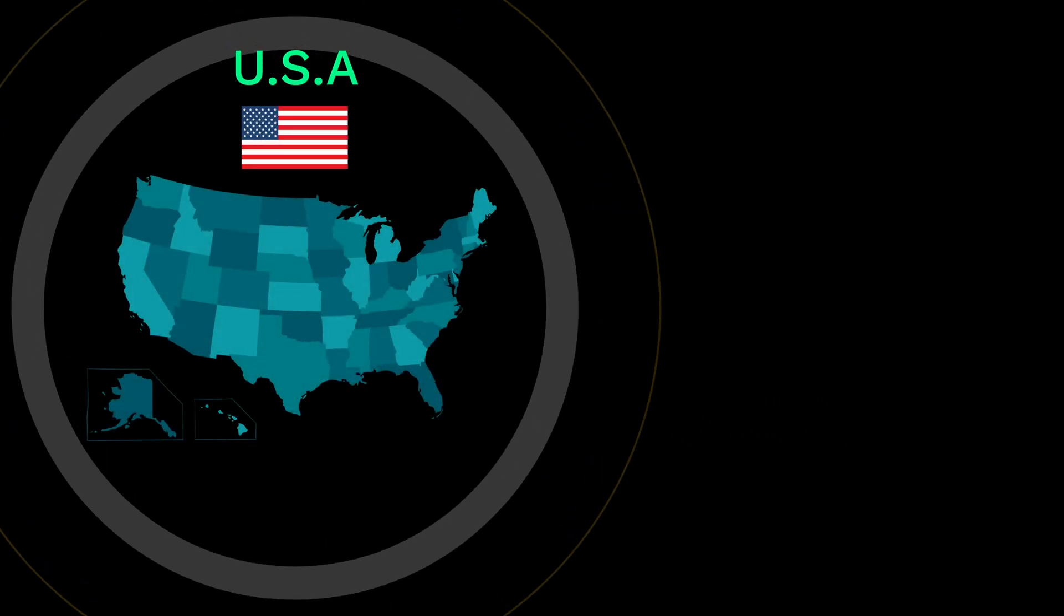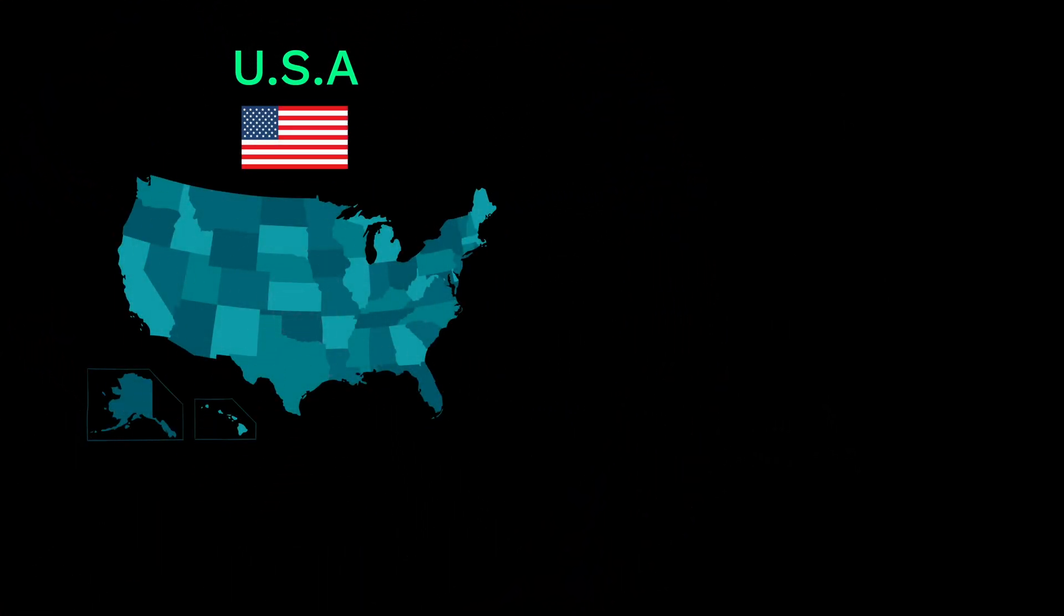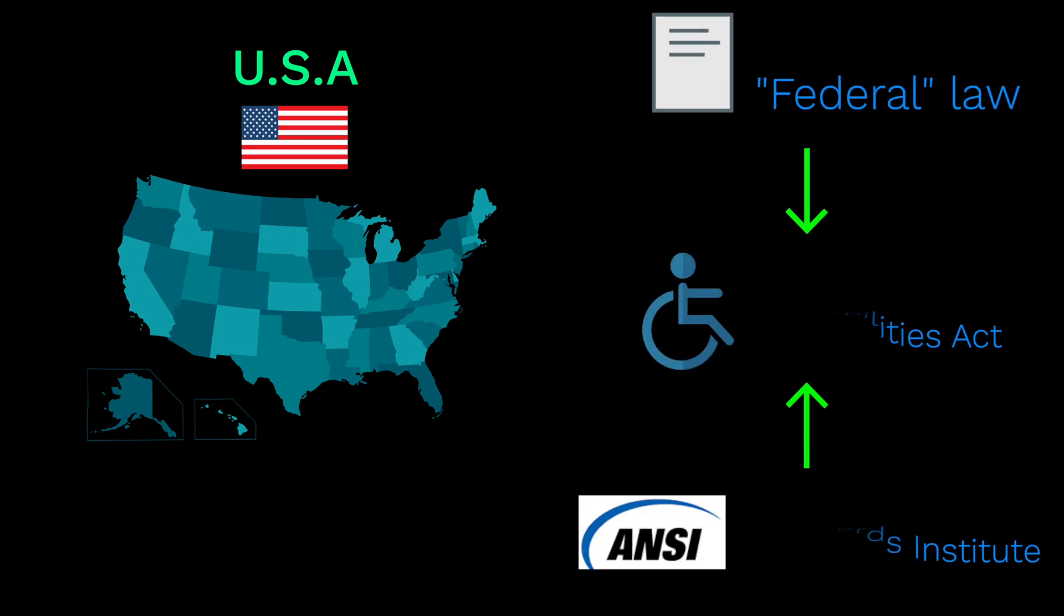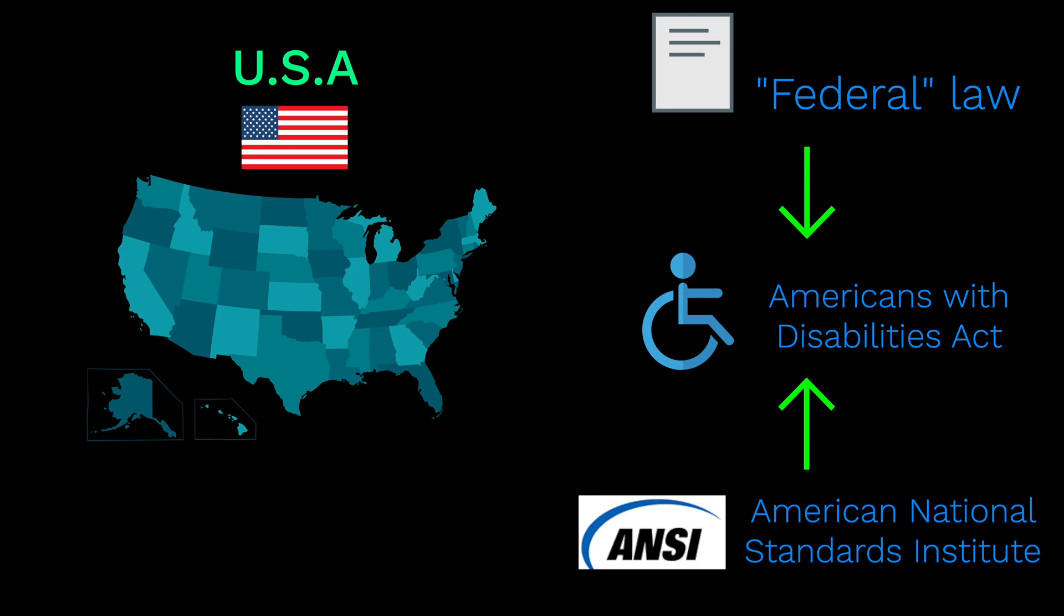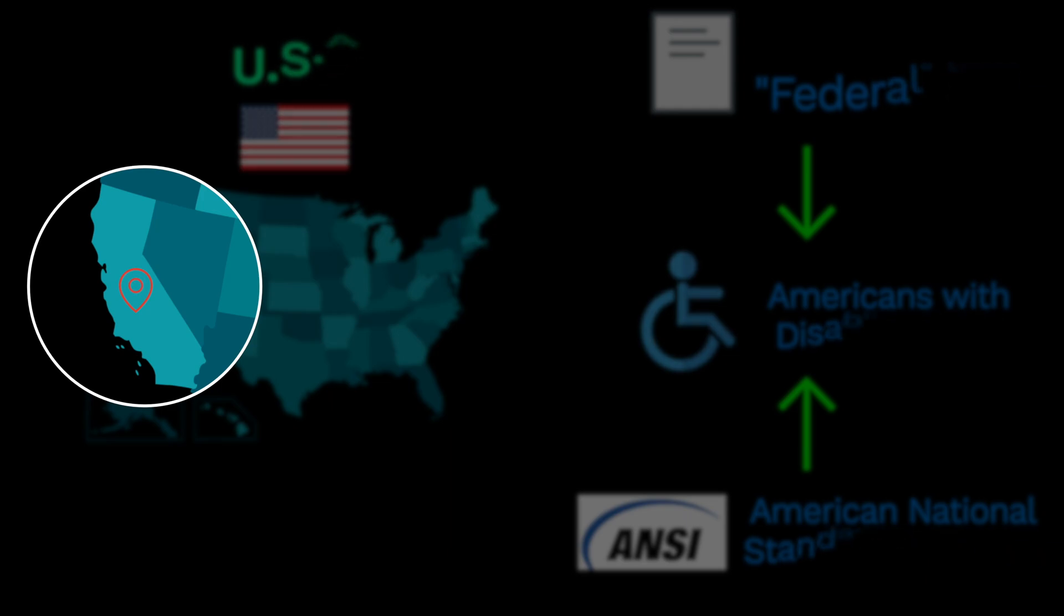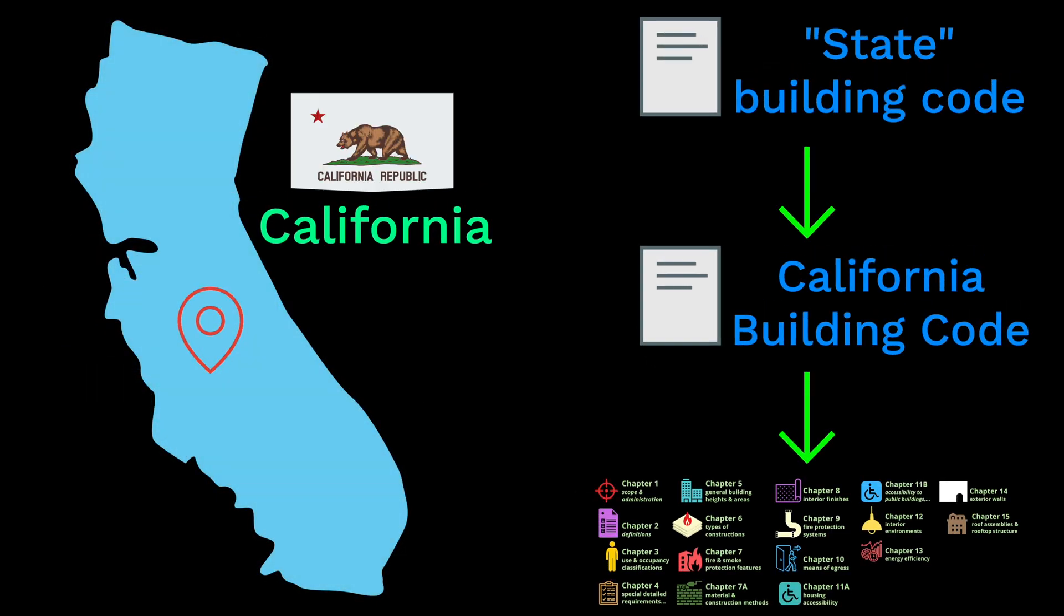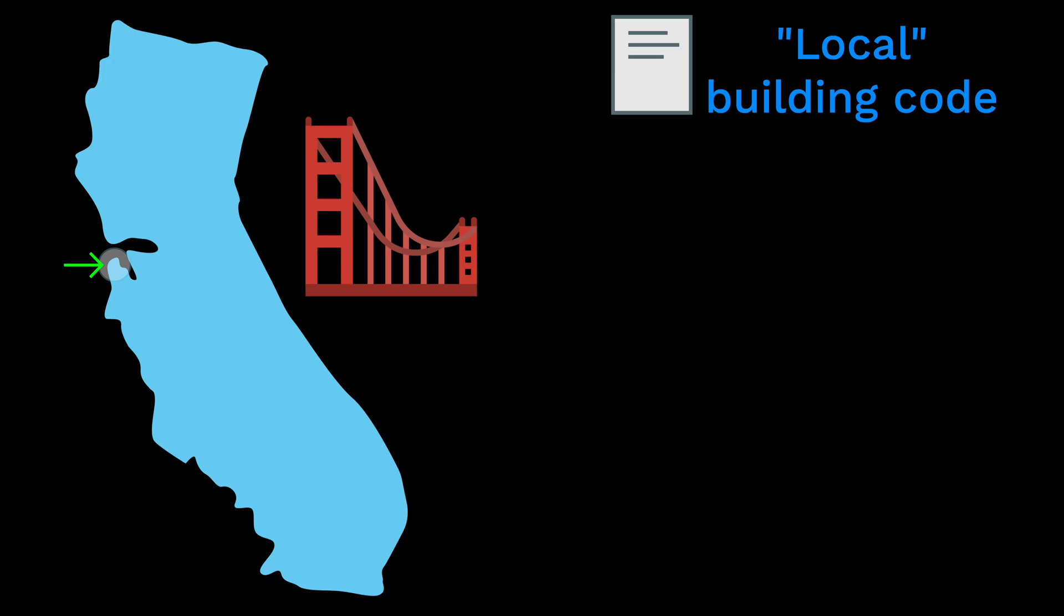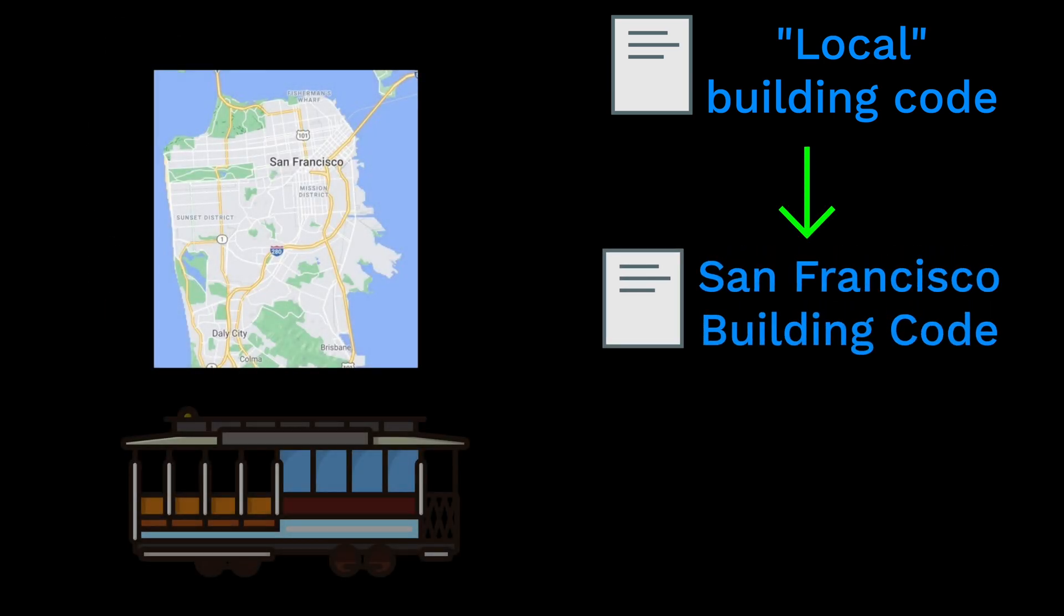Let's think about the whole country first. A perfect example of federal regulation all architects must follow is the ADA, or the Americans with Disabilities Act, written by ANSI. Now let's select one specific state. Since I live in California, let's pick this one. Here we use the CBC, or California Building Code. This code is a modified version of the IBC to adapt to its particular conditions. Now let's pick one specific spot in California. Let's go to San Francisco.